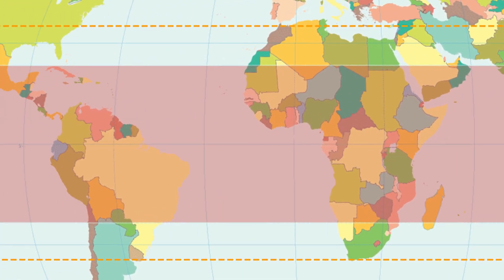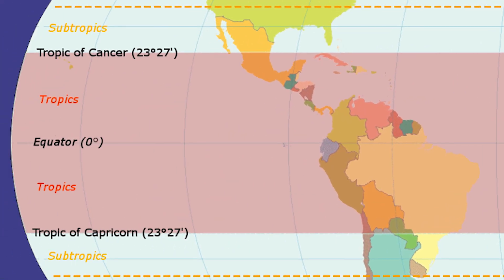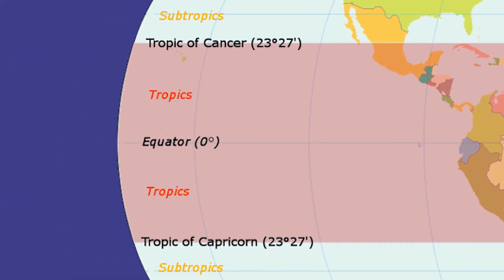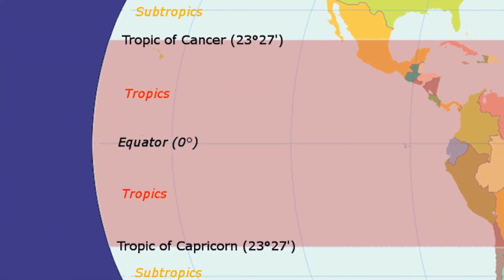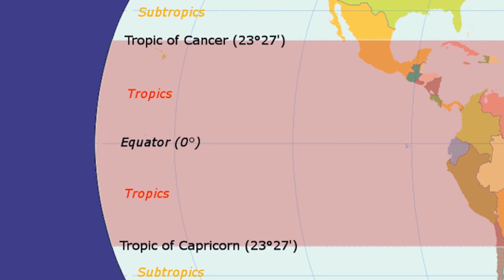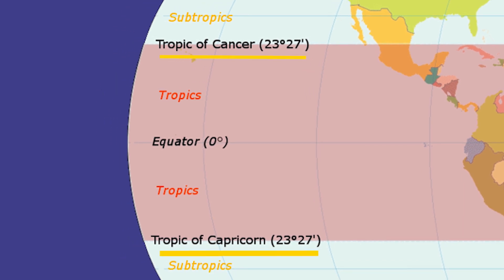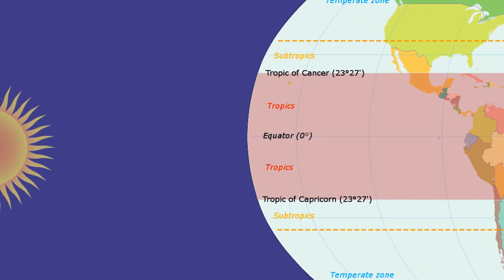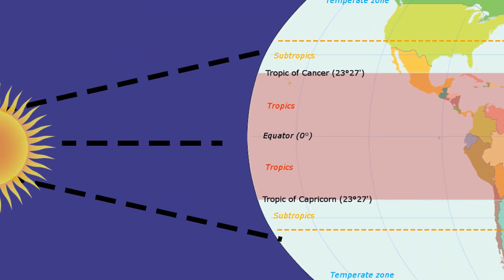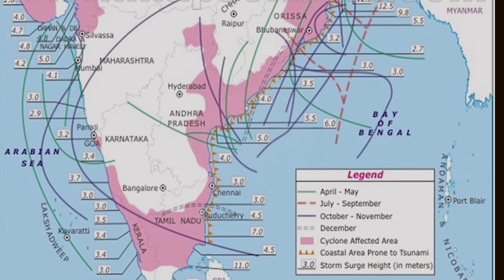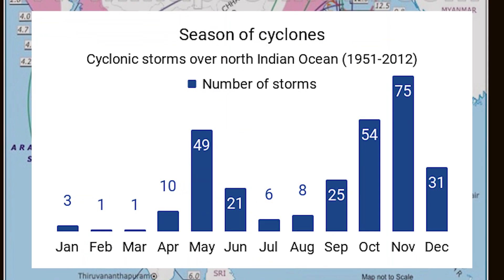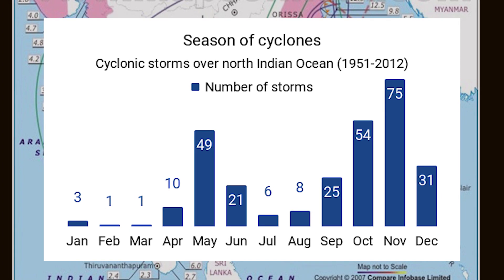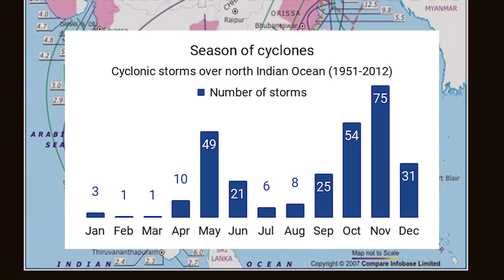Tropical Cyclone mein 'tropical' ka matlab hota hai tropical region. Yeh wo region hai jo Tropic of Cancer aur Tropic of Capricorn ke beech mein hota hai. Yahaan par suraj ki kirnein seedhi aati hain, aur isi wajah se yahaan par zyada garmi hoti hai. India mein zyada tar Cyclone mein se lekar October tak aate hain, aur kabhi kabhi November mein bhi.